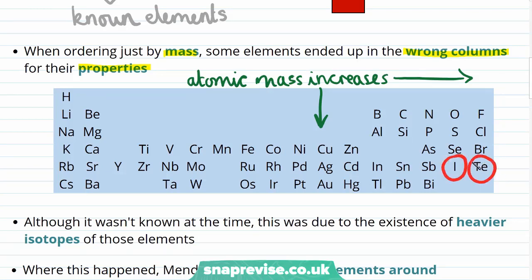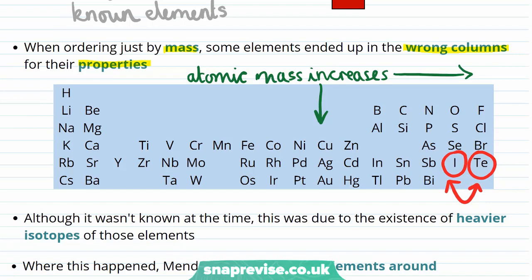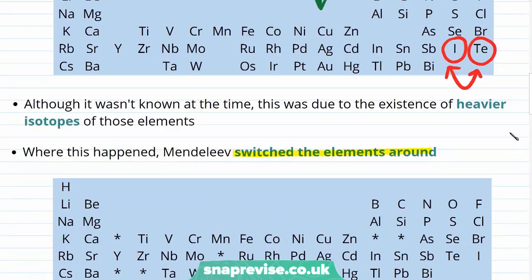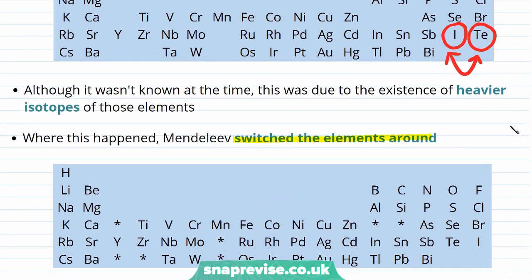For example, iodine and tellurium, when ordering by mass, seemed to be in the wrong order. Where this happened, Mendeleev correctly assumed that the properties were more important, and switched the elements around. And we can see this switch in this updated version of the table.